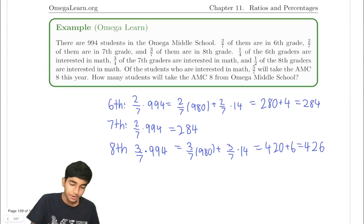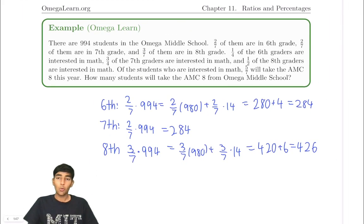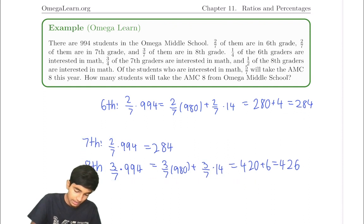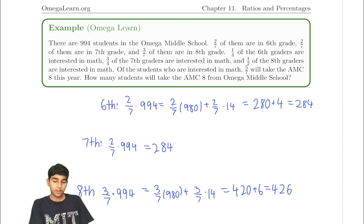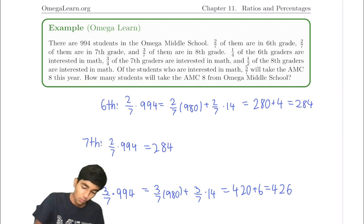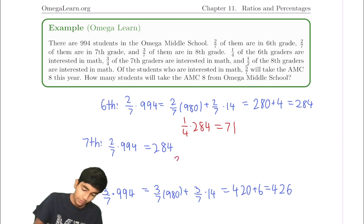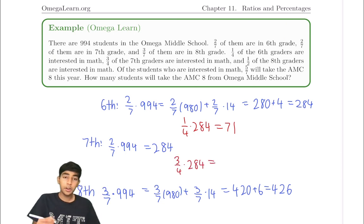So these are the total amount. Now in red, we'll see the amounts that are actually interested in math. So one fourth of the sixth graders are interested in math. One fourth times 284. That's 71. Seventh graders. Three fourths of them are interested in math. Three fourths times 284. That's 71 times three. That's 213.